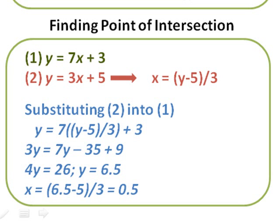I can now substitute this x value into my first equation. In other words, in my first equation, I have y is equal to 7x. Well, now I can write this as y is equal to 7 times my x value, y minus 5 over 3, plus 3.